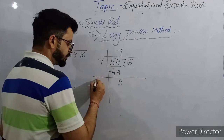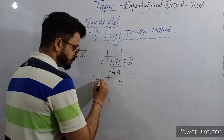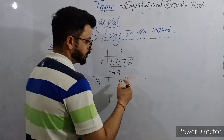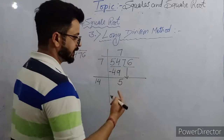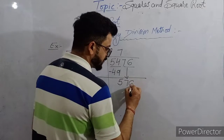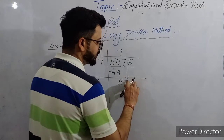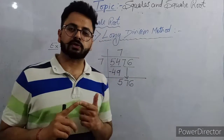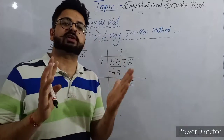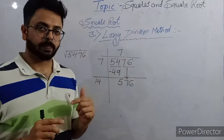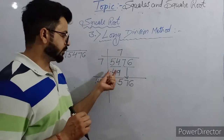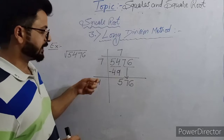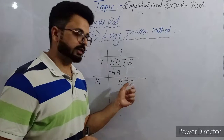Now the second step: we will double this number — that gives 14. We'll note down the next pair. In the second step, we double the number and note down the next period.